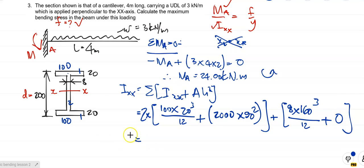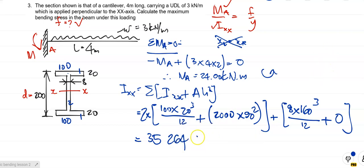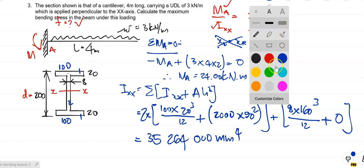So now we can work out Ixx for the cross section. So do it, check it against me before you proceed. And you should have gotten 35,264,000 millimeters to the fourth.